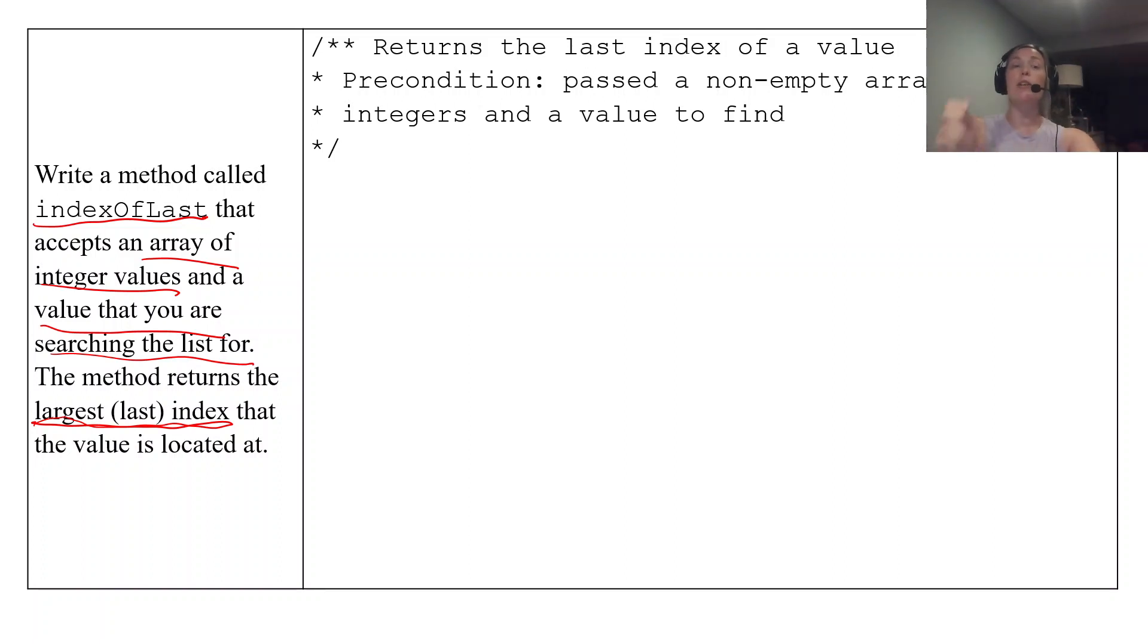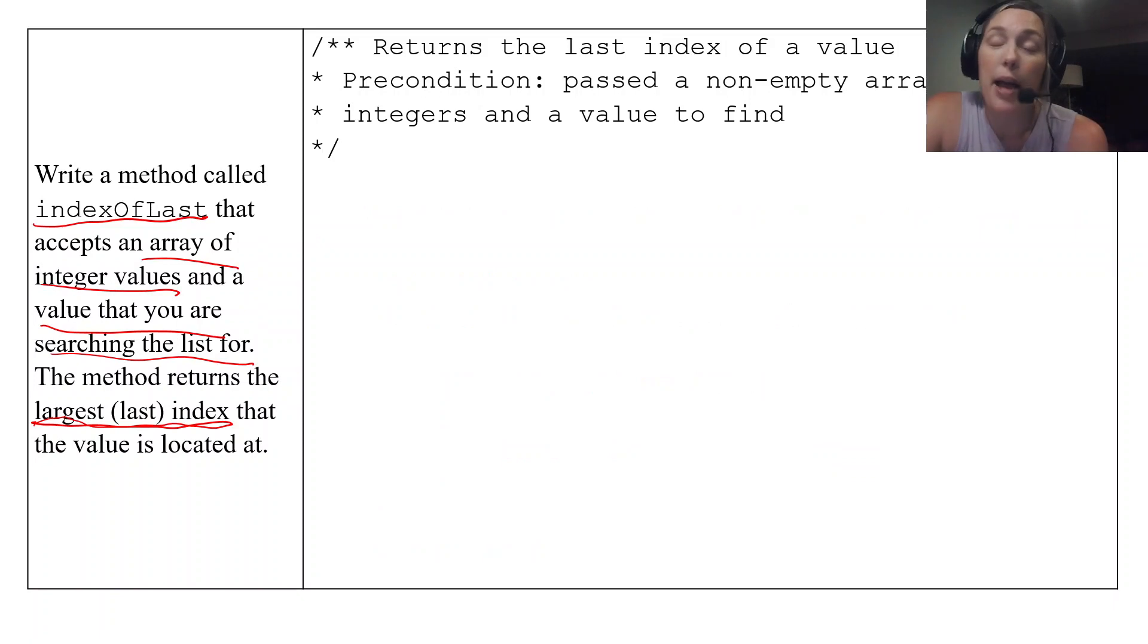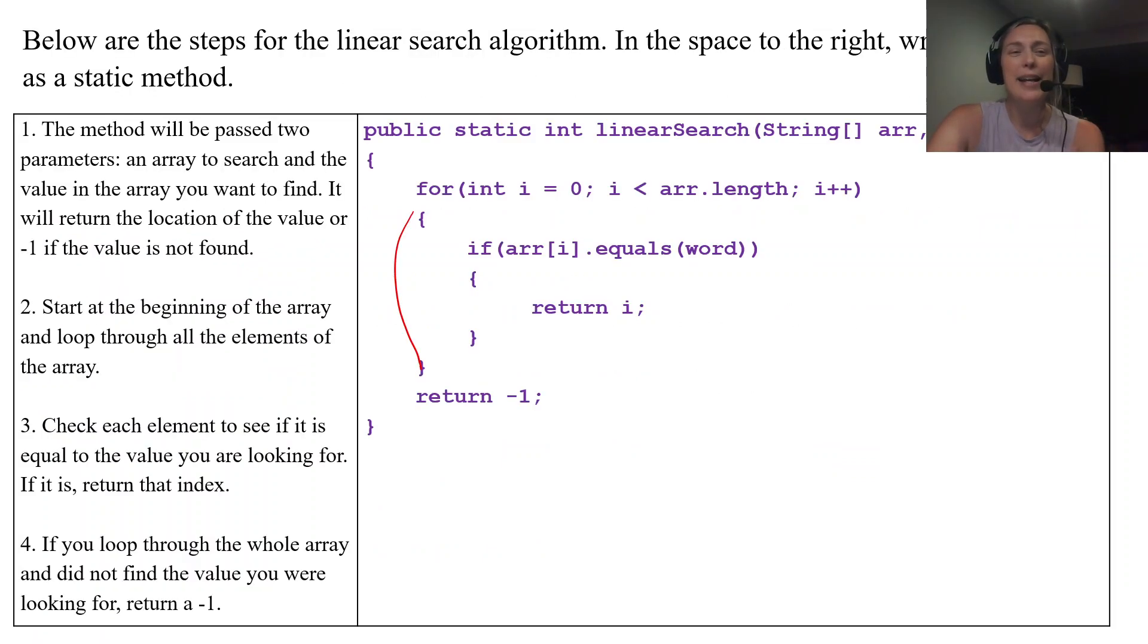So what we just did, we would return the first index. This wants to know the last index, so it's just a minor change in the linear search algorithm. Oh, I guess I have it all at once. So if you want to try writing this, you can. I'm going to go back real quick and just talk about how I would modify this.